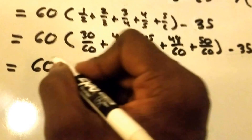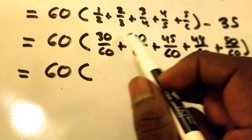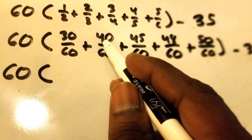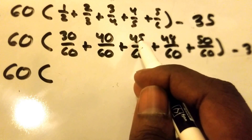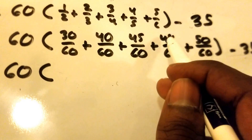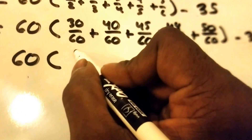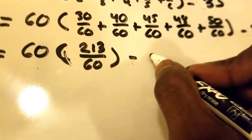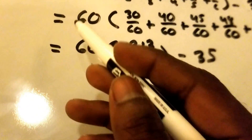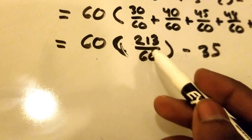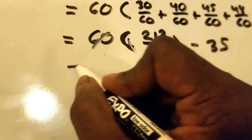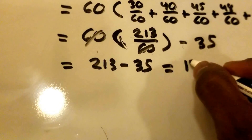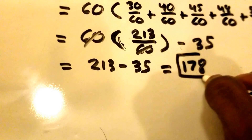Now we can group the numerators and add them together: 30 plus 40 plus 45 plus 48 plus 50. That gives us 30 plus 40 equals 70, plus 50 is 120, plus 45 is 165, plus 48 is 213. So we write 213 over 60, minus 35. Then 60 times 213 over 60 — we cross out the 60s and just get 213 minus 35, which equals 178. So 178 is our answer.